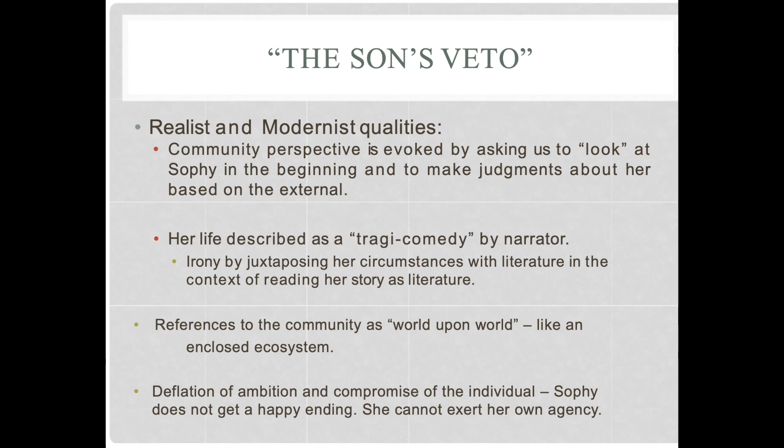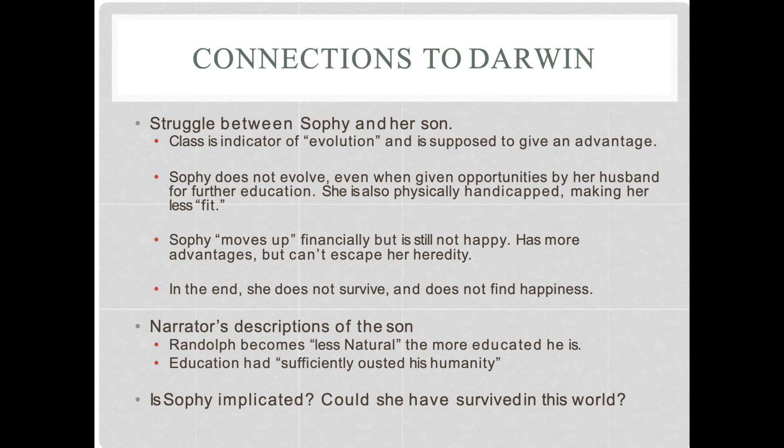Let's look at some of the connections specifically to Darwin's theory underlying this story. Mainly, you want to think about the struggle happening between Sophie and her son. The struggle for existence is what we're pulling from Darwin, and thinking about how that idea is manifesting in this text. There are a couple of different places where we can see that struggle happening.